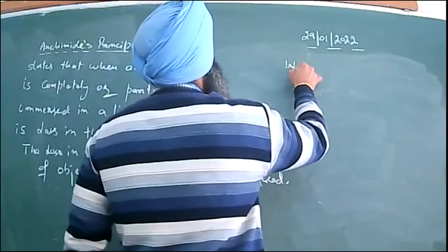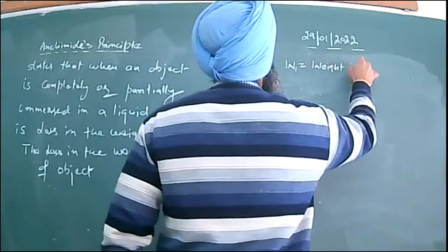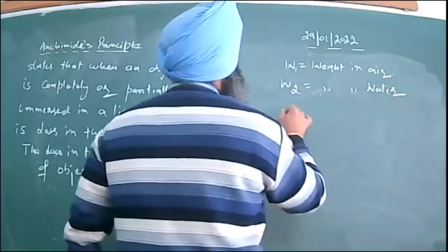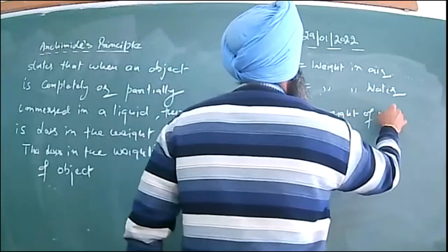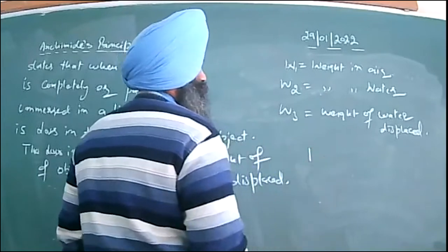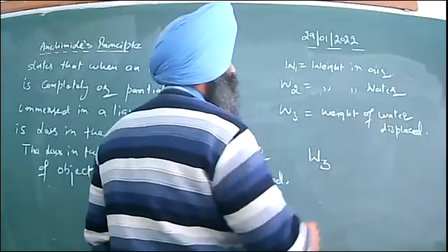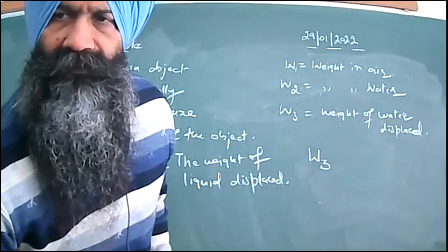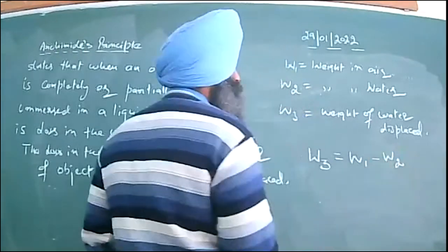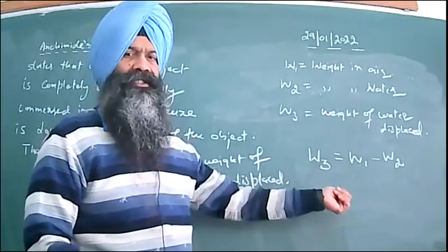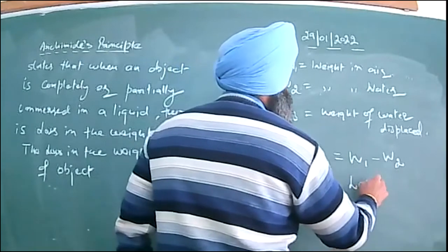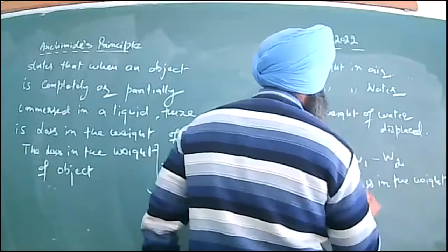So: if W1 is the weight in air, W2 is the weight in water, and W3 is the weight of water displaced, then W3 is equal to W1 minus W2 — that is, the weight of the water displaced equals the loss in the weight of the object.